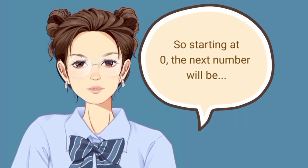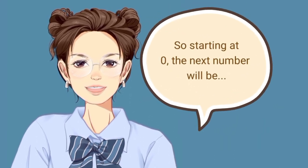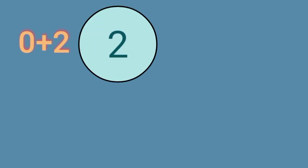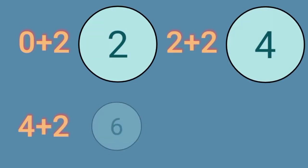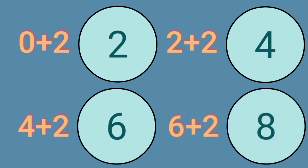Starting at 0, the next number will be 0 plus 2 is 2, 2 plus 2 is 4, 4 plus 2 is 6, and 6 plus 2 is 8.